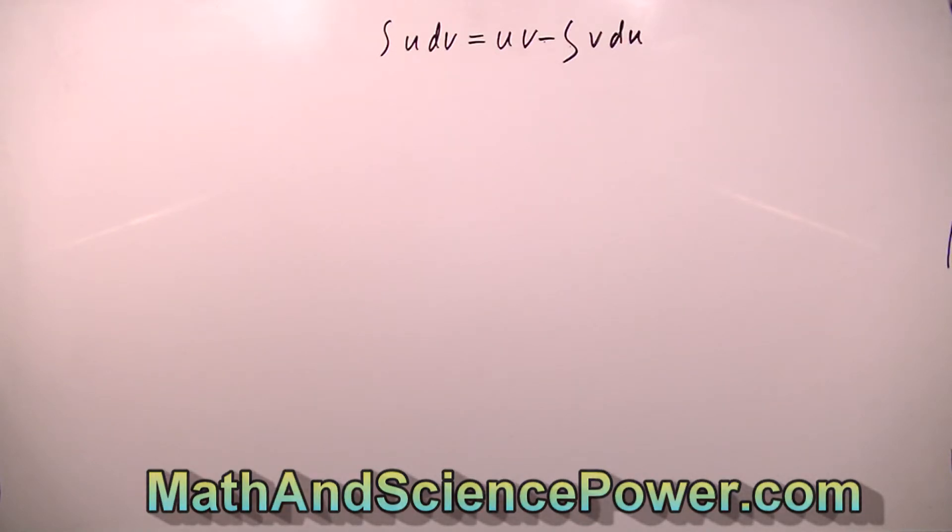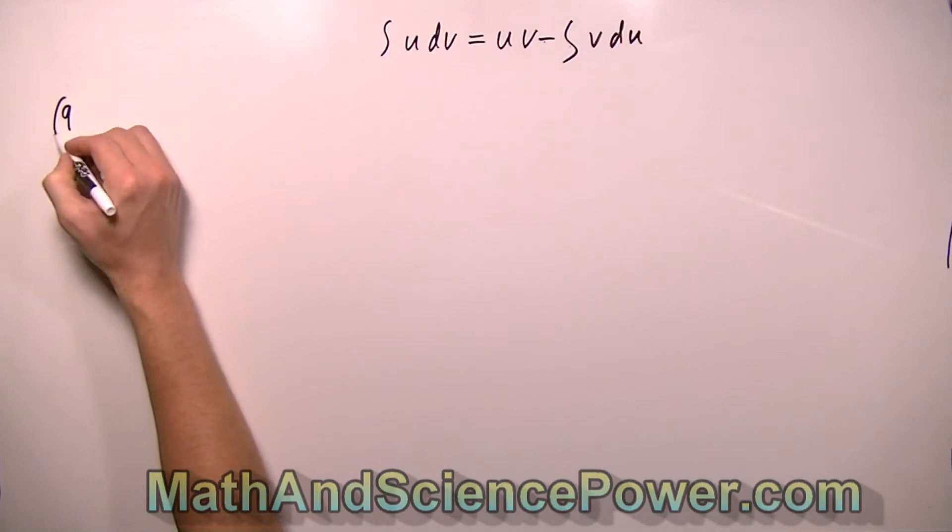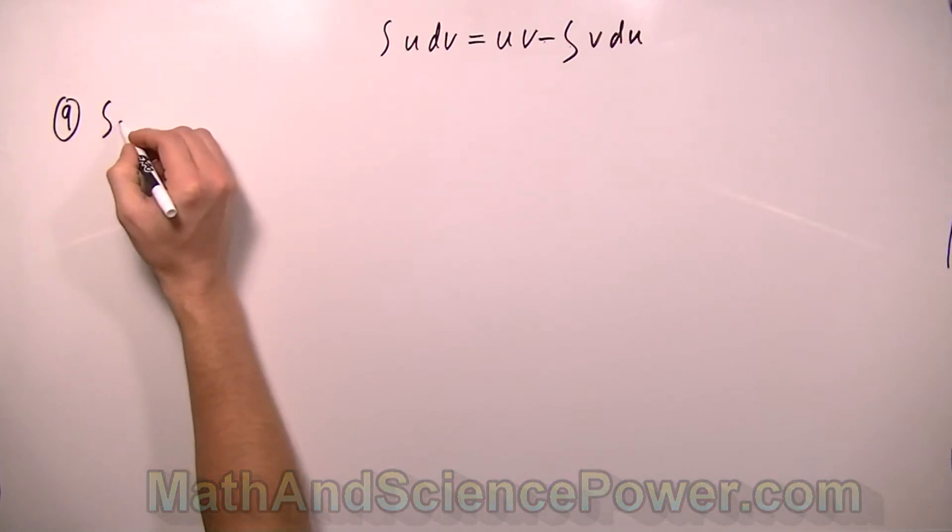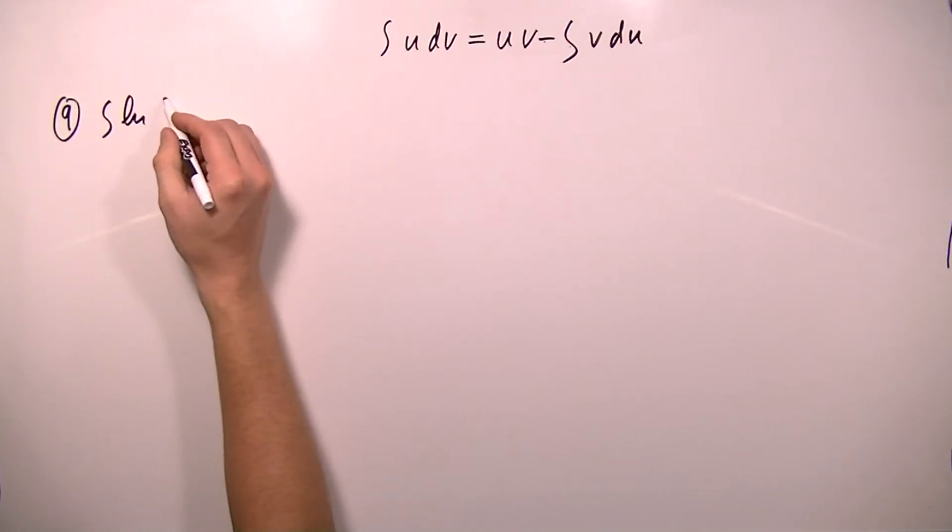Okay, we're working with integration by parts, and number 9 asks us to find the integral of the natural logarithm of the cubed root of x.